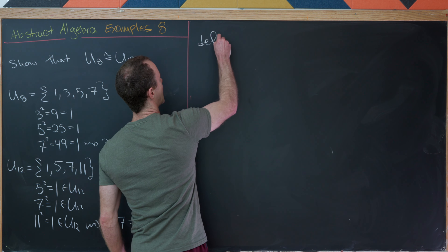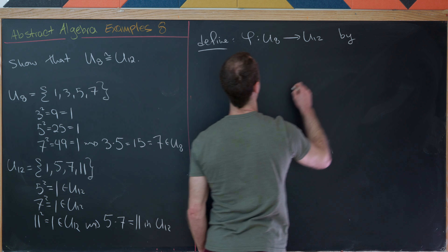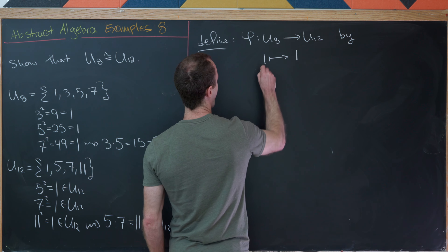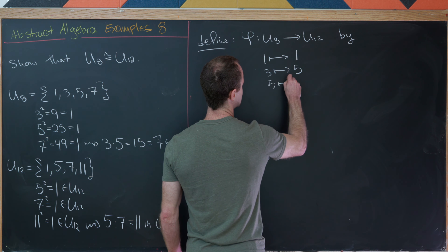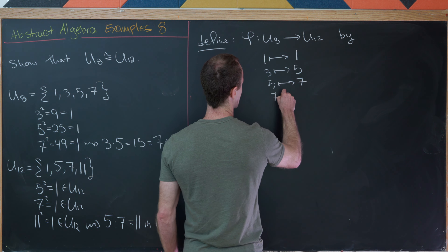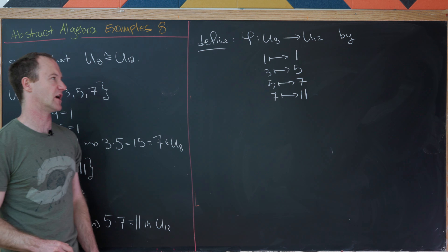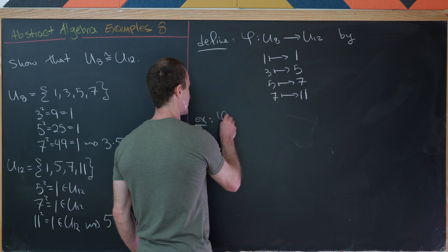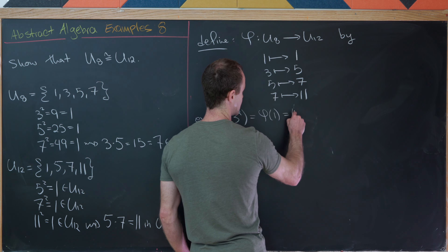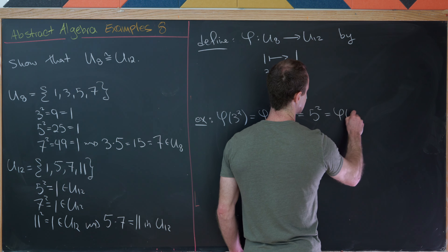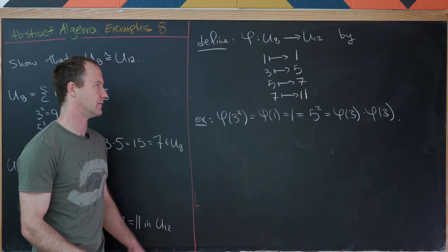Let's define φ from U8 to U12 by: 1↦1, 3↦5, 5↦7, and 7↦11. By checking the calculations, we see everything works. For example, φ(3²) = φ(1) = 1 = 5² = φ(3)·φ(3), verifying the homomorphism rule on 3.